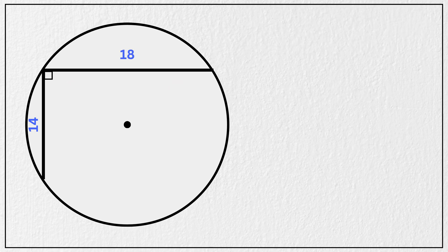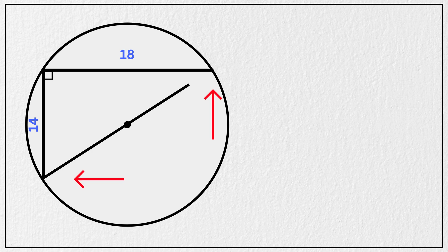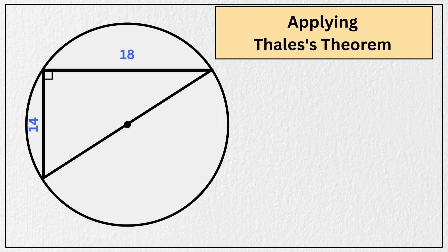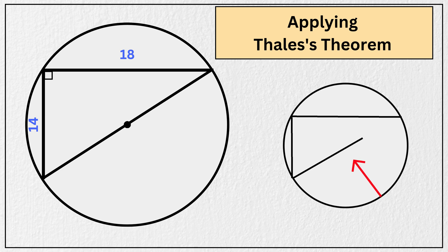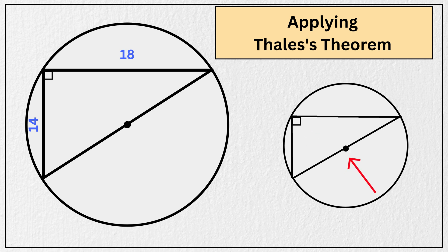Let's clean up again for our next part. Connect these two endpoints with a straight line passing through the center of the circle. Applying Thales' theorem — if one side of a triangle is the diameter of a circle, the opposite angle must be a right angle — and that also confirms this line passes through the center. Let's label the radius as r, so the diameter becomes 2r.